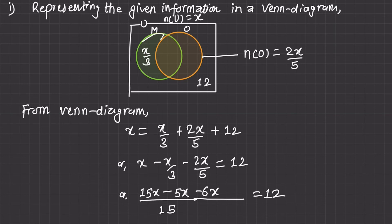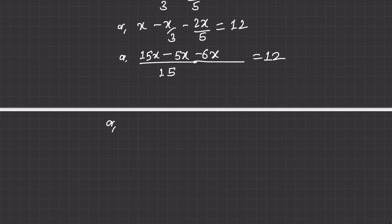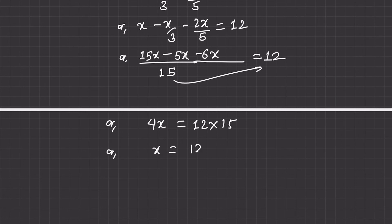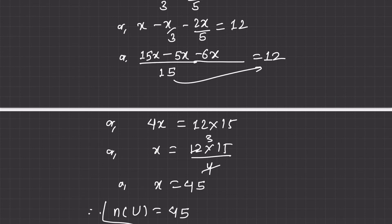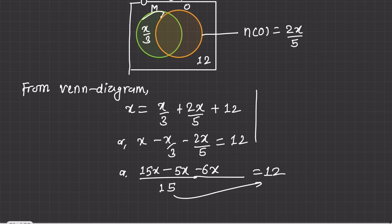Solving further, 4X equals 12 into 15, divided by 4. Since 4 and 12 simplify, and 15 gives 45, therefore the number of U equals 45. So X equals 45 — the total number of children is 45.